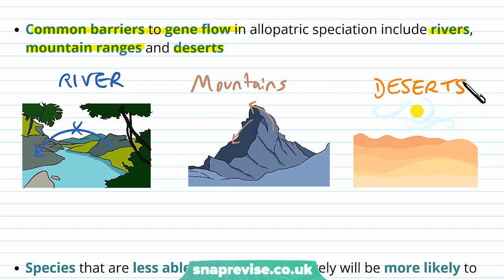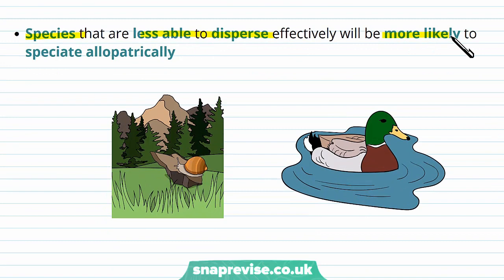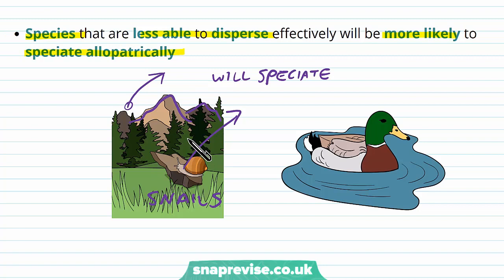Species that aren't able to disperse very well are more likely to speciate allopatrically. For example, snails are very slow moving, so if two groups of snails of the same species are separated by a mountain, those on each side will probably speciate into different species. However, ducks and other birds are able to fly globally, so they can reproduce with organisms of the same population across vast distances and are therefore less likely to speciate. It depends on whether the barrier can be crossed or not.